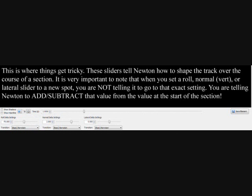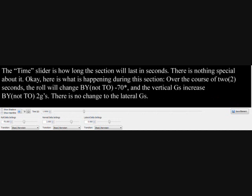This is where things get tricky. These sliders tell Newton how to shape the track over the course of a section. It is very important to note that when you set a roll, normal, or lateral slider to a new spot, you are not telling it to go to that exact setting — you are telling Newton to add or subtract that value from the value at the start of the section. The time slider is how long the section will last in seconds. For example, over the course of two seconds, the roll will change by — not to — negative 70 degrees, and the vertical Gs increase by — not to — two Gs. There is no change to the lateral Gs.